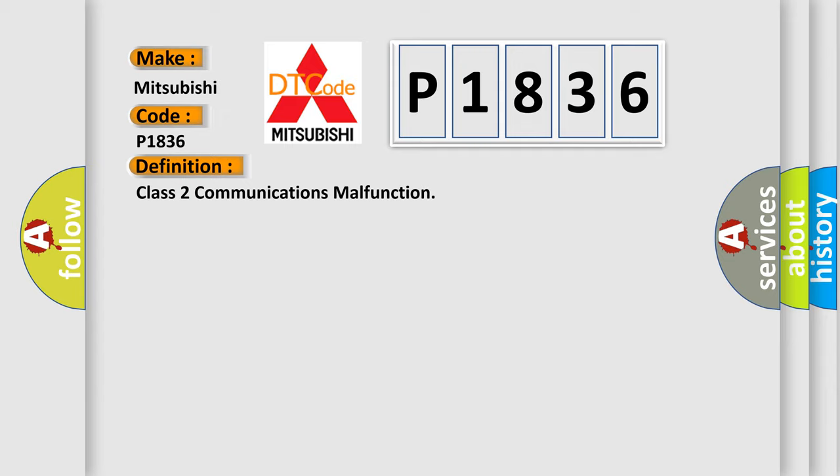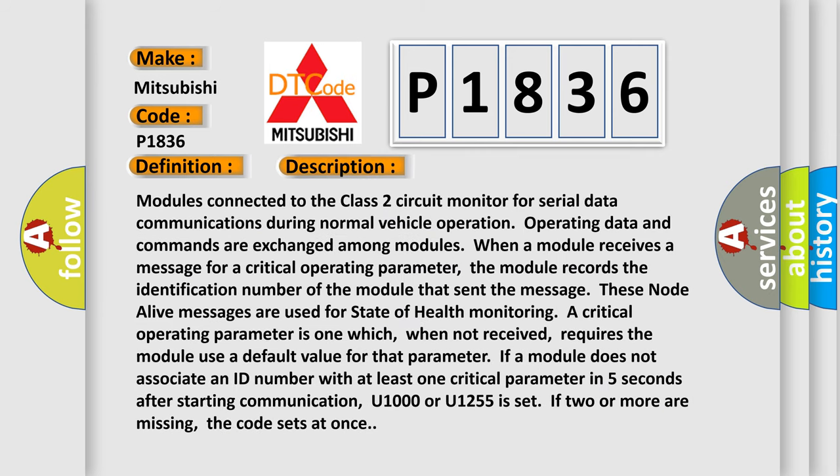Here is a short description of this DTC code. Modules connected to the Class 2 circuit monitor for serial data communications during normal vehicle operation. Operating data and commands are exchanged among modules. When a module receives a message for a critical operating parameter, the module records the identification number of the module that sent the message. These node alive messages are used for state of health monitoring. A critical operating parameter is one which, when not received, requires the module to use a default value for that parameter. If a module does not associate an ID number with at least one critical parameter within five seconds after starting communication, U1000 or U1255 is set. If two or more are missing, the code sets at once.